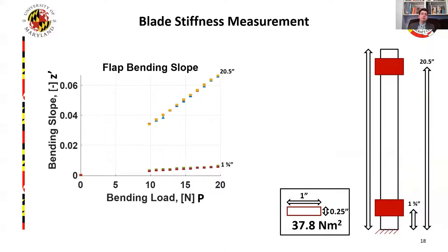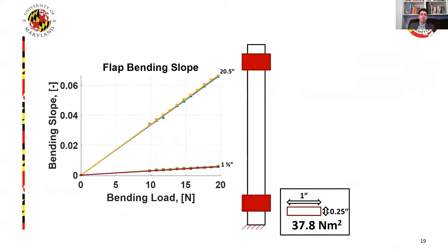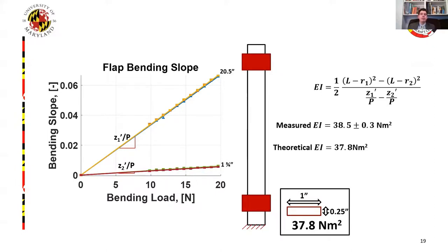Since this is a new type of measurement, it was first validated on an aluminum beam. With a 1 inch by 1/4 inch cross-section, it has a theoretical EI of 37.8 Nm². In the graph on the left, we see the results of three trials overlaid on top of each other, showing good repeatability. These represent the bending slope of the accelerometer placed near the tip as well as near the root. Each data point also includes 95% confidence intervals. The confidence band is relatively constant across each test, indicating that the error is only due to electrical noise in the accelerometer. By fitting a line through these two curves and taking the slopes, we back out the EI for the aluminum beam, and we see that it agrees well with the theoretical value.